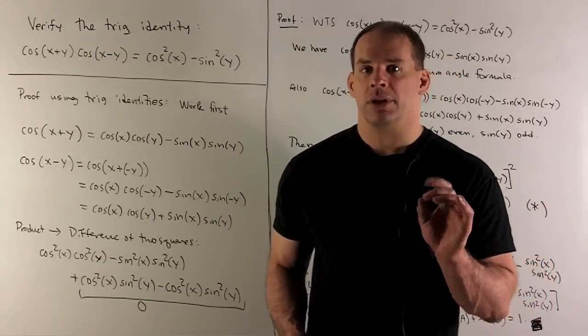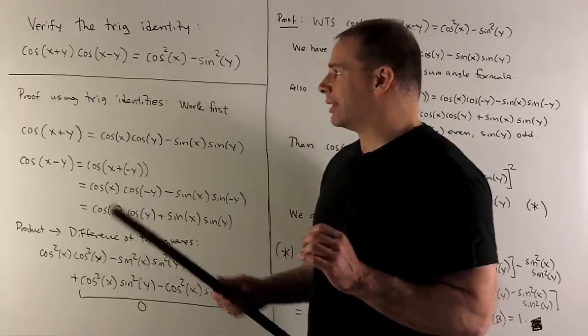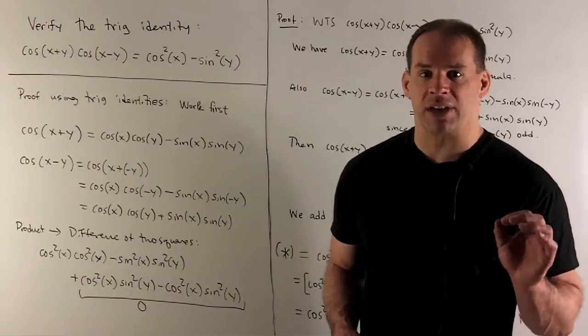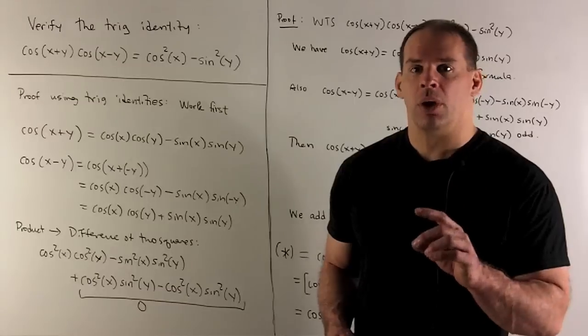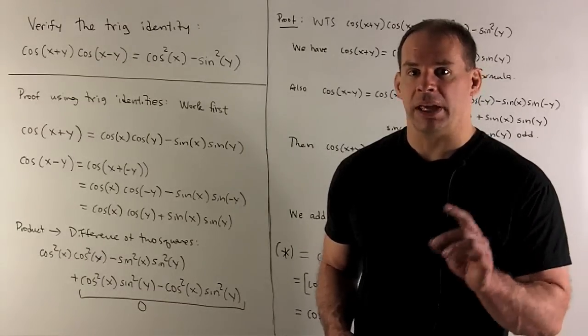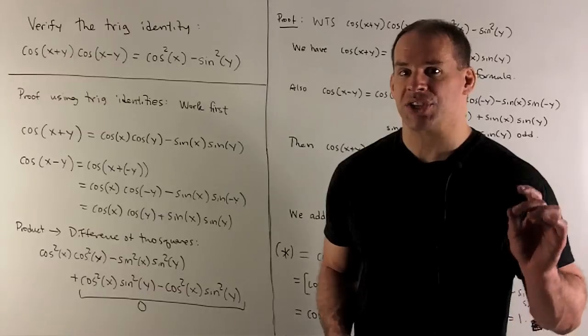Okay, first part. So, what do we have? On the left-hand side, I have cosine of x plus y times cosine of x minus y. So, we have cosine of a sum. Either with that memorized or we look it up. So, that's going to be cos cos minus sine sine.